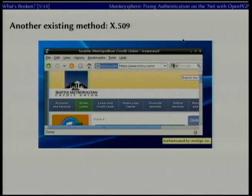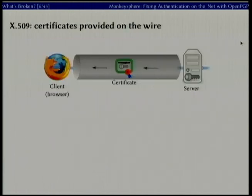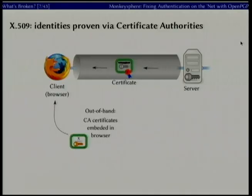X.509, seen in HTTPS, is another way you see this. If you scroll down and hover over the lock in any given browser, it'll tell you that this website is being authenticated — in this case by VeriSign. Once again, we have a certificate going over the wire as part of a handshake with the server. In this particular case, X.509 has out-of-band certificates embedded in the browser, and there are also some in /etc for other uses like OpenLDAP. There's this concept of an out-of-band mechanism for authenticating the certificate coming across the wire.